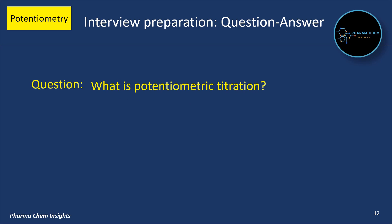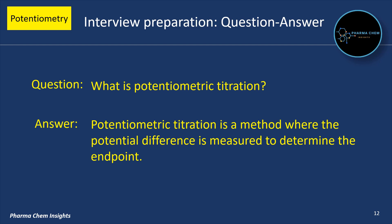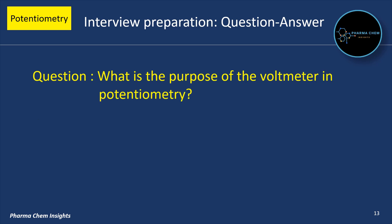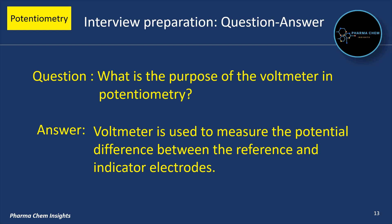What is a potentiometric titration? A titration method where the potential difference is measured to determine the end point is called potentiometric titration. What is the purpose of the voltmeter in potentiometry? The voltmeter is used to measure the potential difference between the reference and indicator electrode.